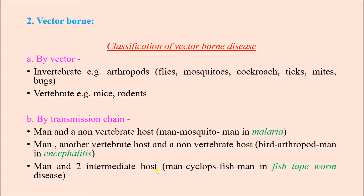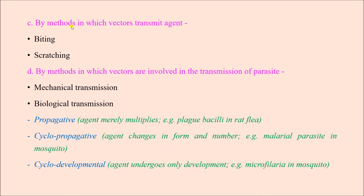In the malaria transmission chain, the parasite is present in an infected person; the mosquito takes a blood meal and the parasite enters the mosquito, which then injects the parasite into another healthy person. Vectors transmit agents by either biting or scratching. Mechanical transmission occurs where the vector only carries the causative agent from a reservoir to a host. Biological transmission can be of three types: propagative, cyclopropagative, and cyclodevelopmental.